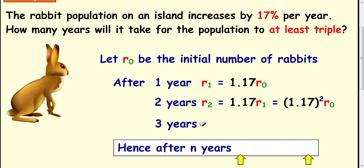And finally if you look at R3, the third year for the rabbit population, we multiply the second year by 1.17 again. And considering the initial population, then you're doing 1.17 to the power of 3 times R0.